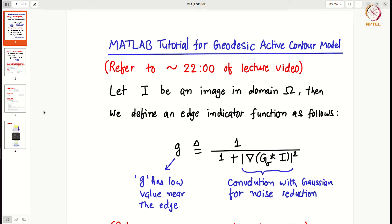So how is it different? In the snake model we start with an initial snake, an initial curve. For example, the curve was C, parameterized by S, and then we had an explicit evolution equation of C, like ∂C/∂t equals something.